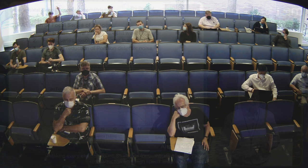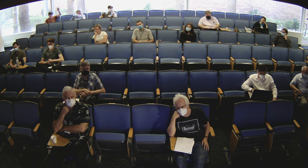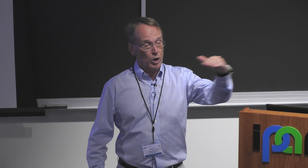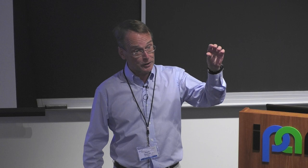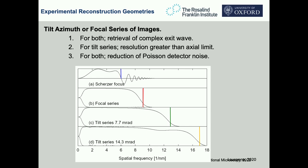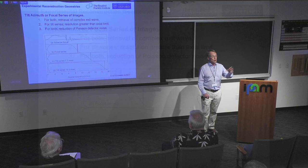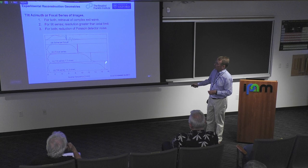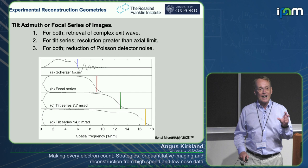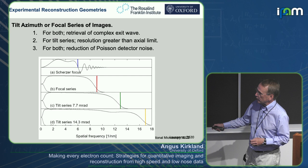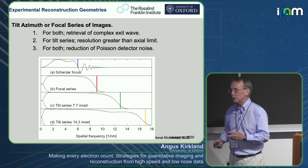To get around the zeros problem, we take sets of images — either a focal series at different defoci, or a tilt series where the illumination is tilted. In a focal series, the zero positions shift with defocus; with enough images the transfer function becomes continuous. Tilting the illumination also shifts the zeros and can super-resolve data beyond the conventional axial limit. This tilt series restoration has since been adopted by the optical community as Fourier ptychography.